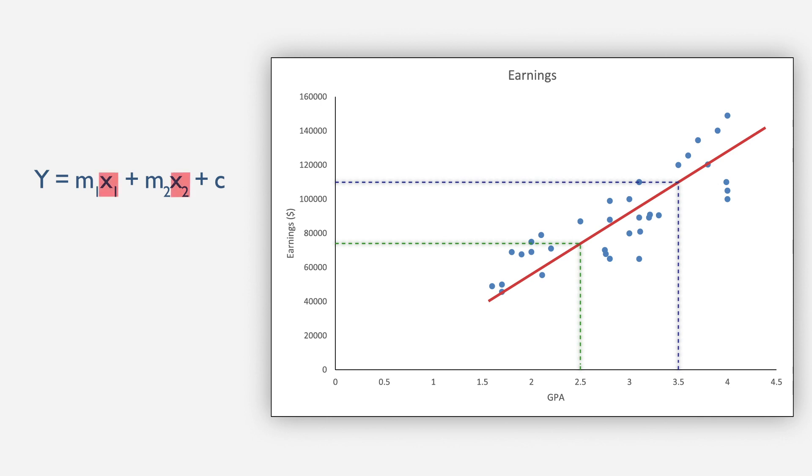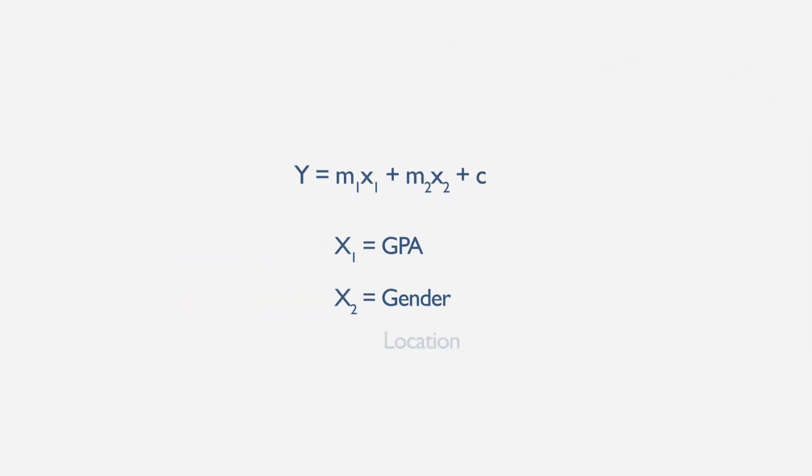In this formula, you have two independent variables, x1 which could be GPA and x2 which could be gender. And in the same way, you can add other independent variables such as location,